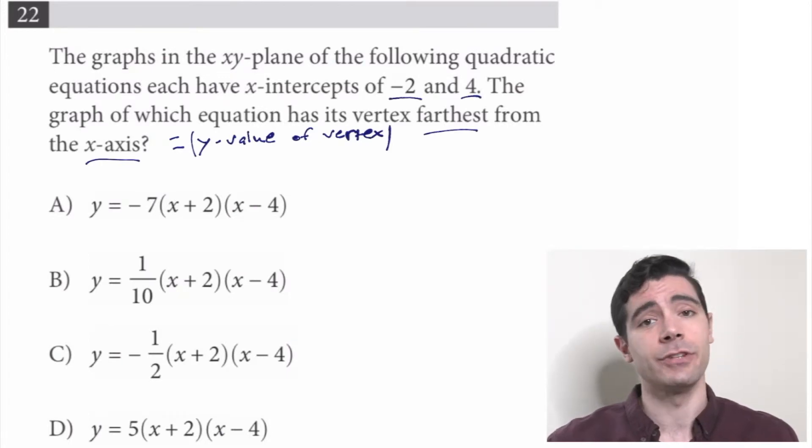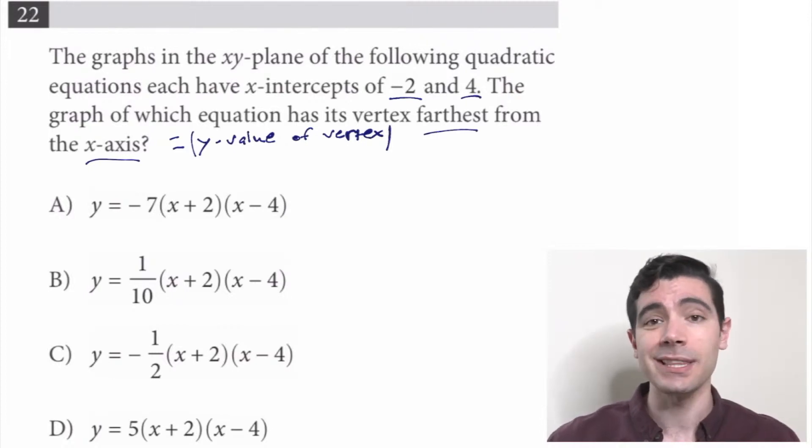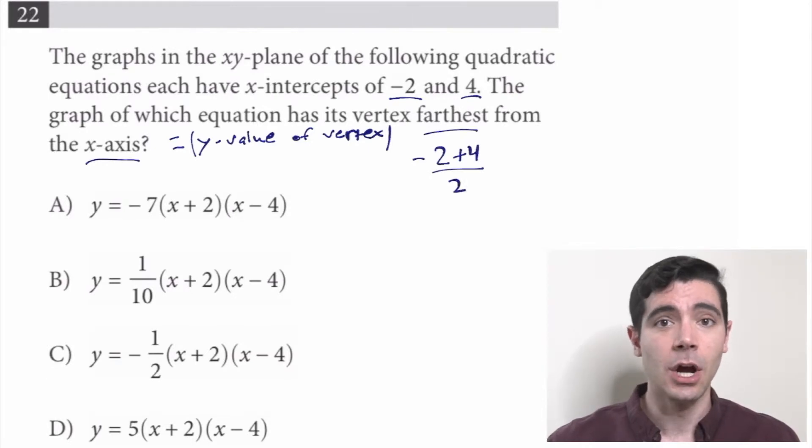The x-intercepts, they tell us, are negative 2 and 4, and the x-value of the vertex has to be directly between those two x-intercepts. So we'll take the average of negative 2 and 4. Negative 2 plus 4 is 2, over 2, since there were two numbers that we added up, would give us 1. So the x-value of the vertex is 1.